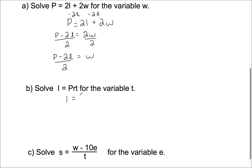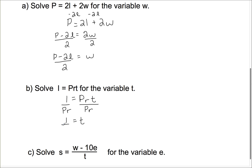So I'm going to isolate this for T. Notice T — this is one big multiplication on this side of the equation. T is being multiplied by P and R, so if I want to get T by itself, I divide by both P and R. If I do that on that side, I have to do it on this side as well. So this side is just plain T, and on this side I have I divided by PR.